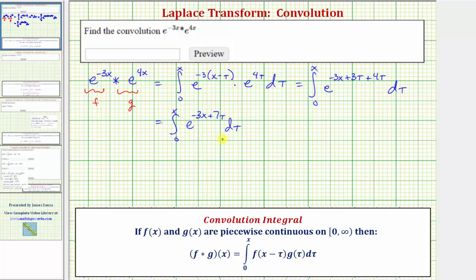And now we'll have to perform u substitution to evaluate the integral, where we'd have u equal the exponent of negative 3x plus 7 tau.